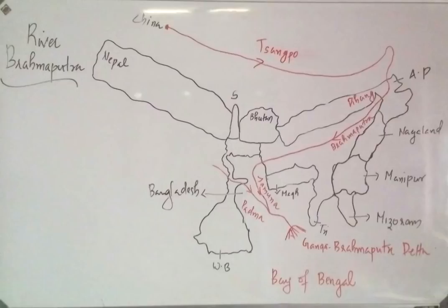This river forms the largest delta in the world, called the Sundarbans Delta, also known as the Ganga-Brahmaputra Delta. This river eventually drains into the Bay of Bengal, creating the Sundarbans Delta.